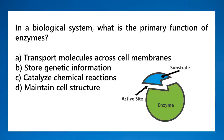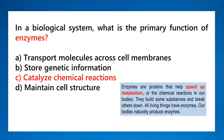In a biological system, what is the primary function of enzymes? Enzymes are biological catalysts — they catalyze and speed up chemical reactions. They speed up metabolism, which is the sum total of all chemical reactions in the body. They build some substances and break others down. All living things have enzymes; our bodies naturally produce them.